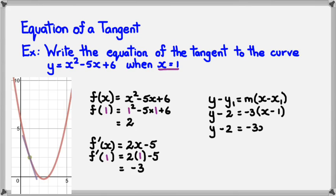So simplifying this, I'm going to get y - 2 = -3x + 3. And rearranging, I will end up with y = -3x + 5. And there you go, guys. That is how you write the equation of a tangent.